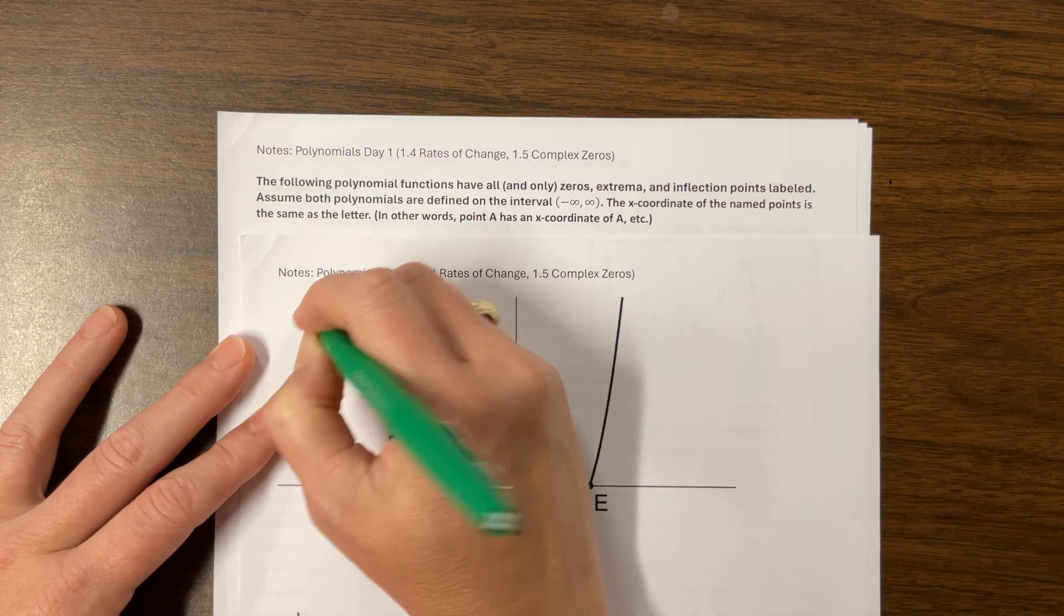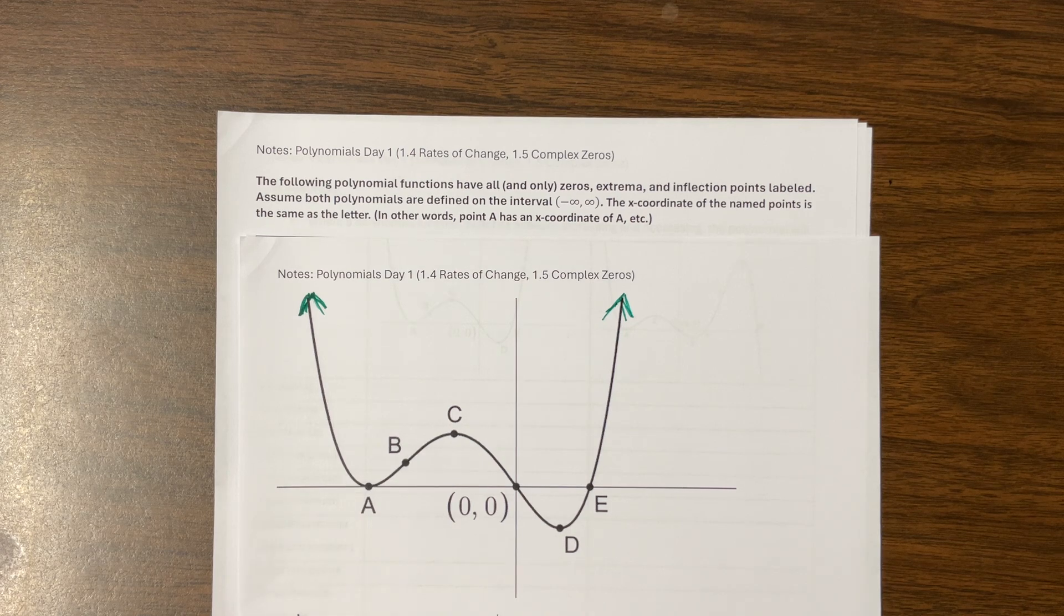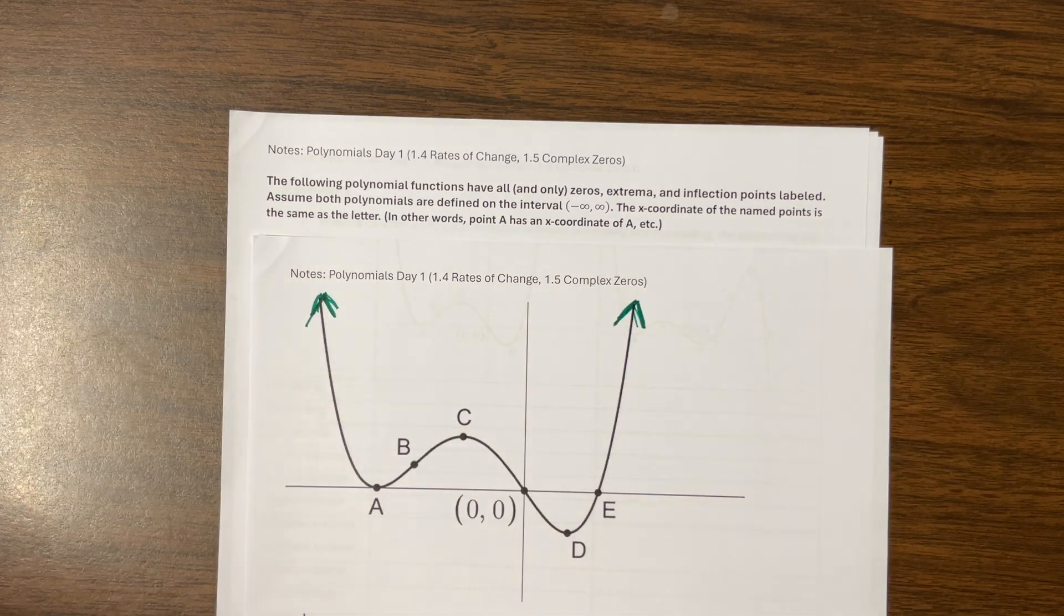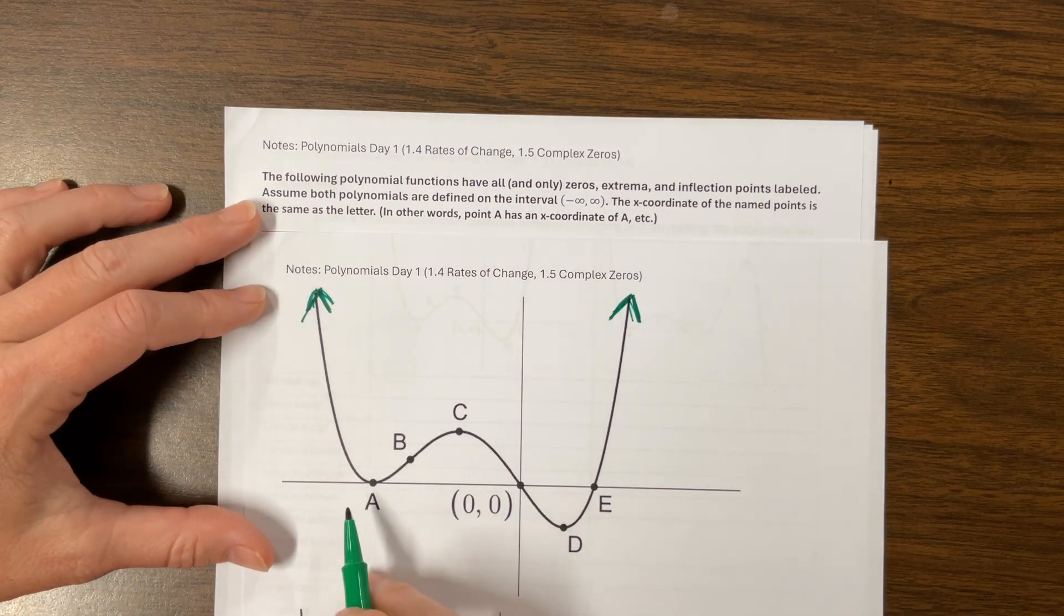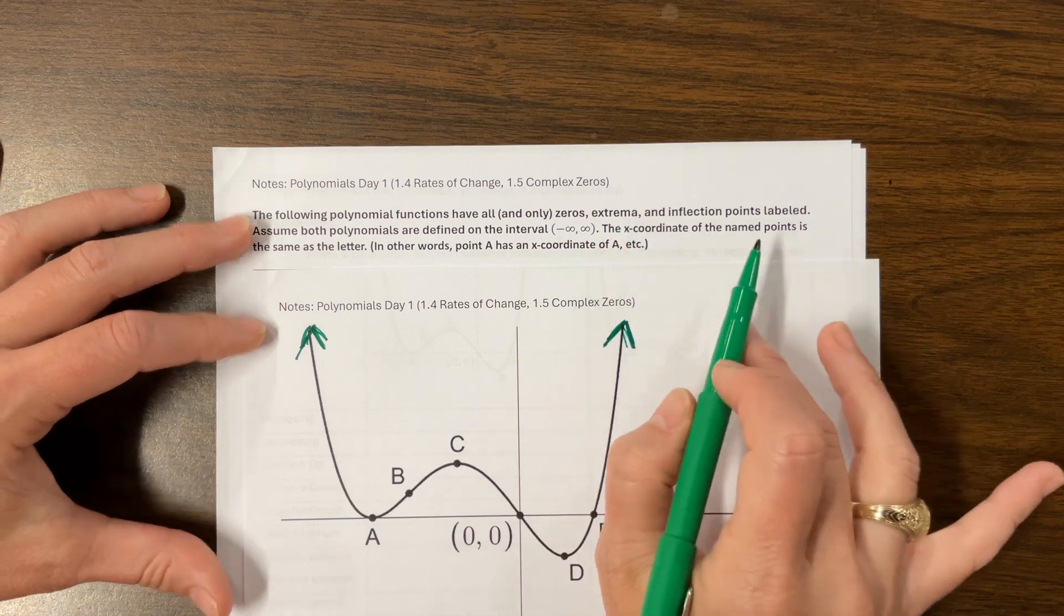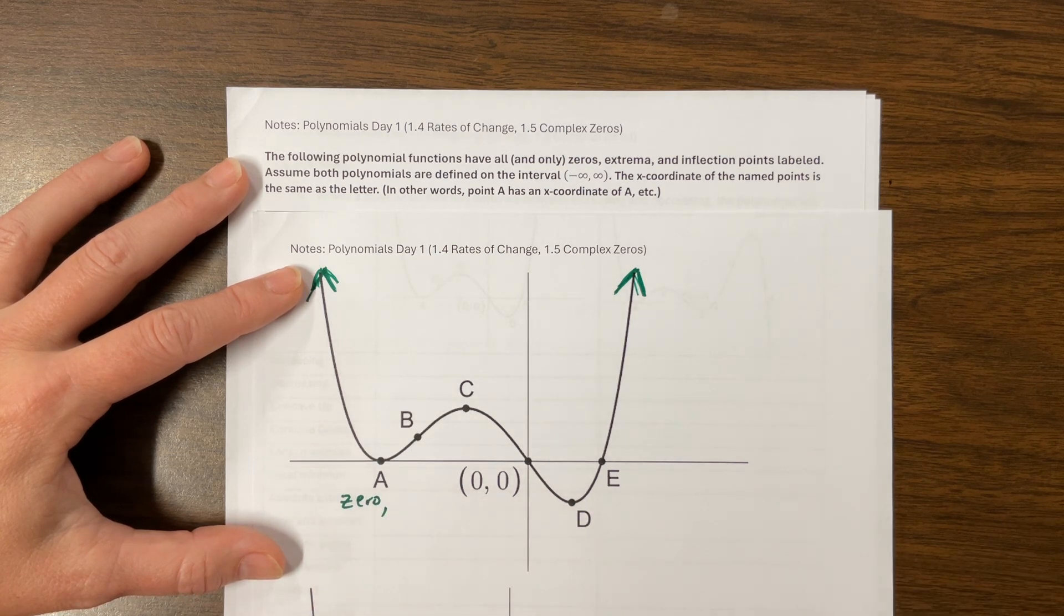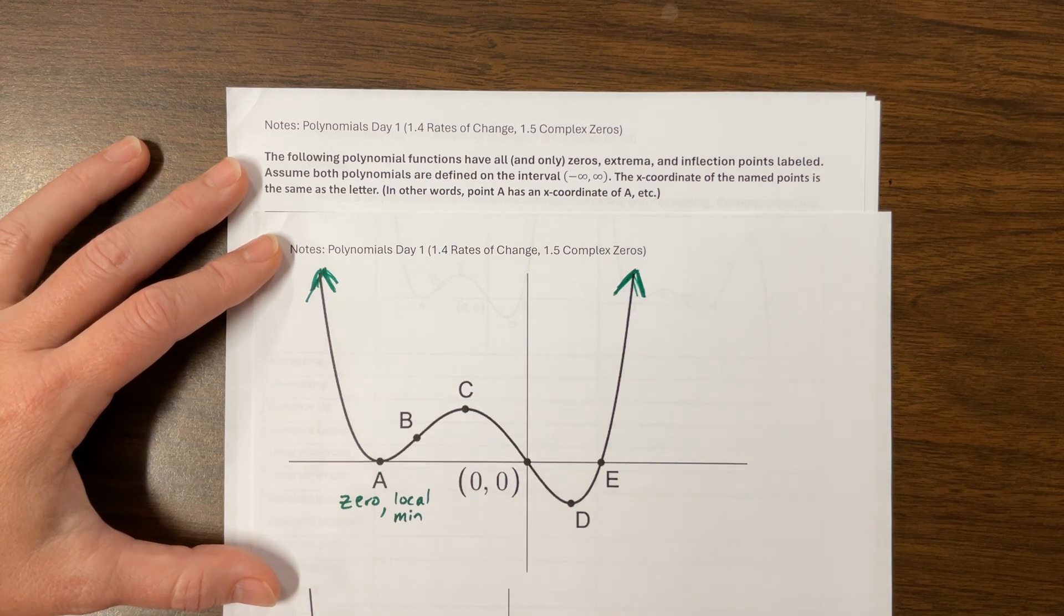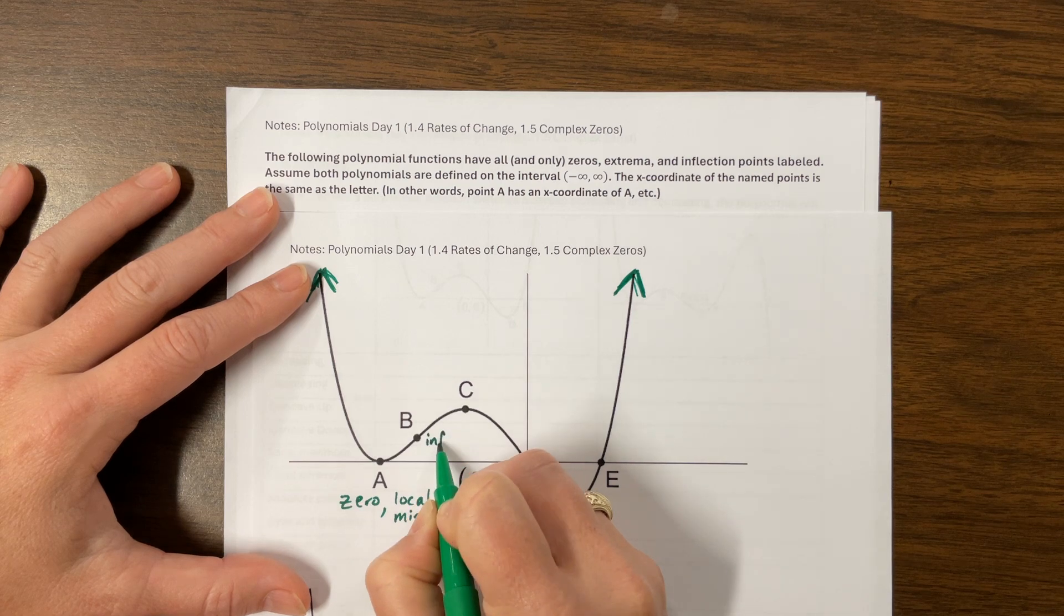I'm saying that both polynomials are defined on the interval negative infinity to positive infinity. If it were easy for me to put arrows here, I would. I'm telling you that there are no other zeros, no other extrema. By the way, extrema means it's either a max or a min. And there are no other inflection points. So what we have here at A, A is going to be both a zero, because notice it's on the x-axis, and it's also a local minimum. B, since it's labeled, it's not an extrema, it's not a zero, so this would be an inflection point.